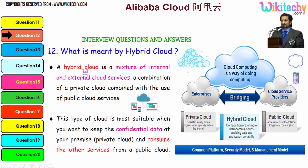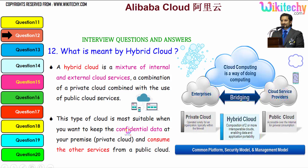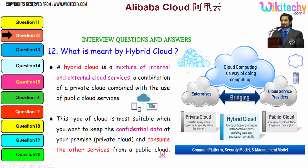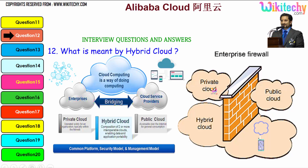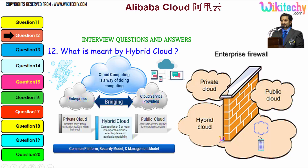By definition, a hybrid cloud is a mixture of internal and external cloud services — a combination of a private cloud combined with the use of public cloud services. This type of cloud is most suitable when you want to keep confidential data at your premises and consume other services from a public cloud. The private cloud has a specific firewall and is really secure; over the public cloud, you don't have many specific firewalls to control intruders. Over the hybrid cloud, it is partial — you have partial secure data inside the firewall and the rest of the data outside the firewall.